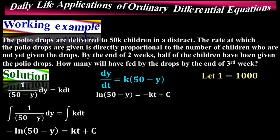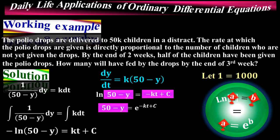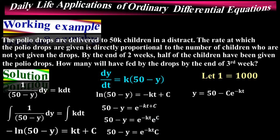Simplifying the equation, we have ln|50 − y| = −kt + C. Applying the logarithmic rule — where ln(a) = b implies a = e^b — with a = 50 − y and b = −kt + C, we get: 50 − y = e^(−kt + C). This can be written as 50 − y = C·e^(−kt), since e^C is itself just a constant C. Solving for y: y = 50 − C·e^(−kt).